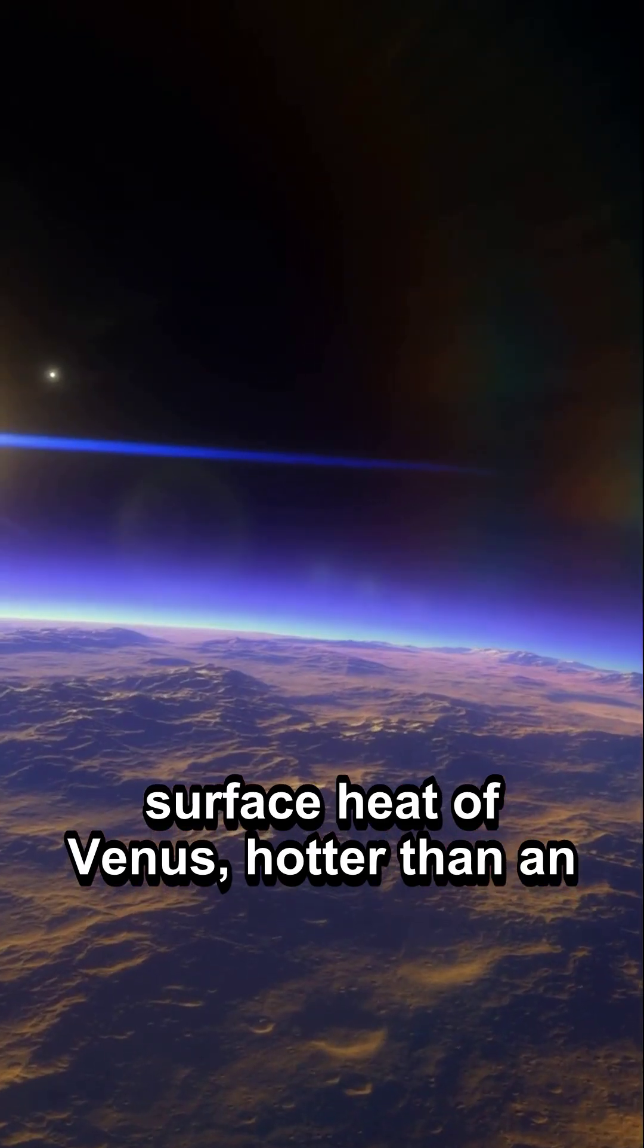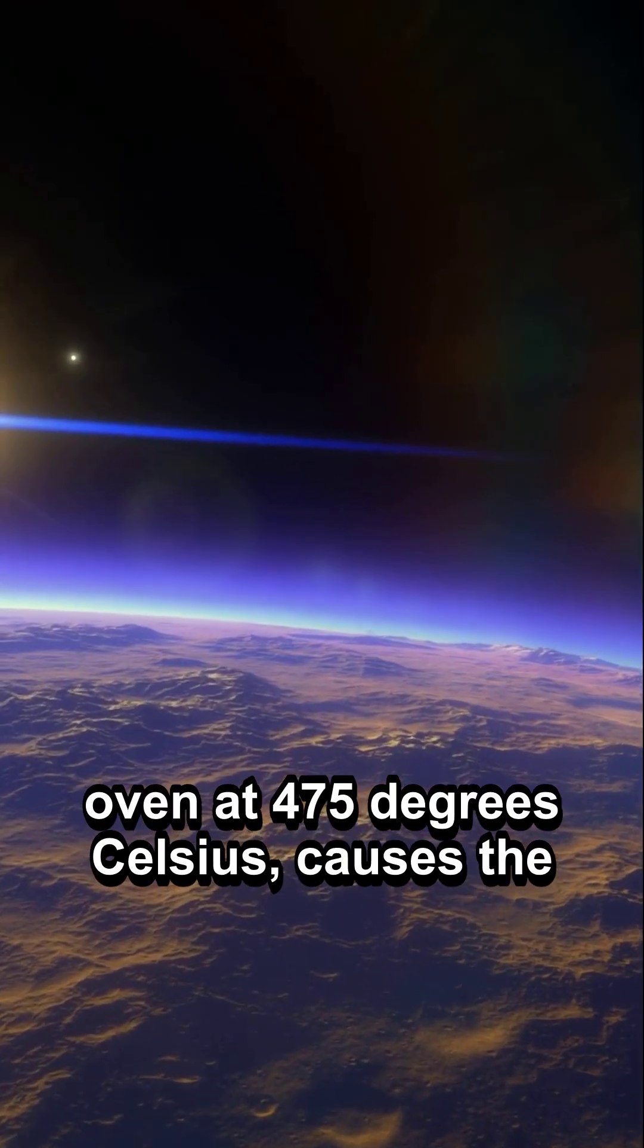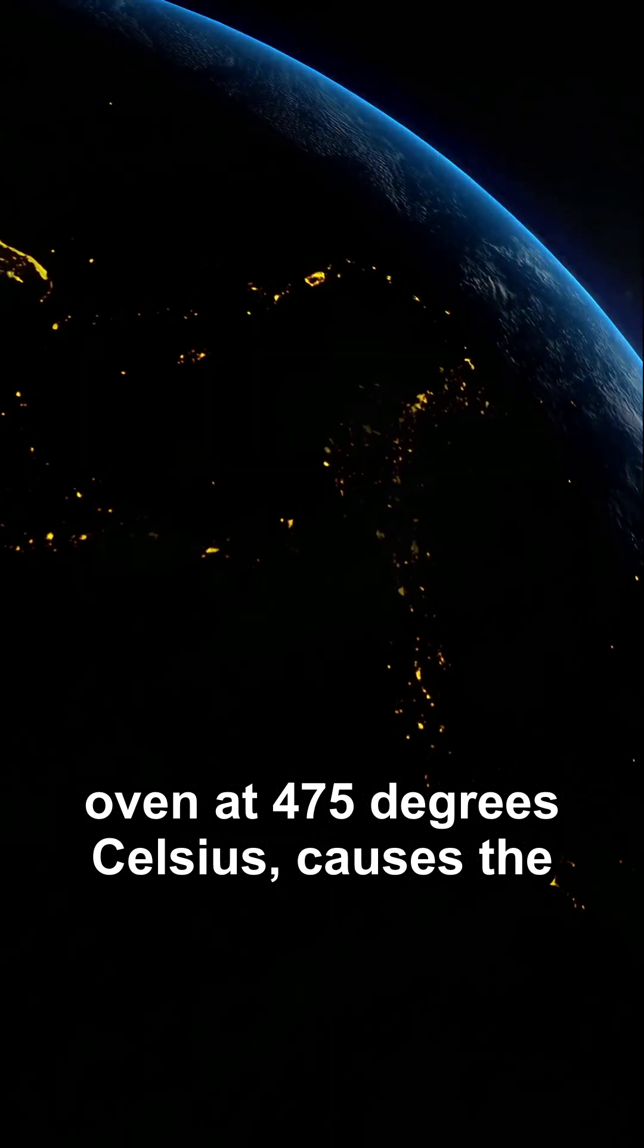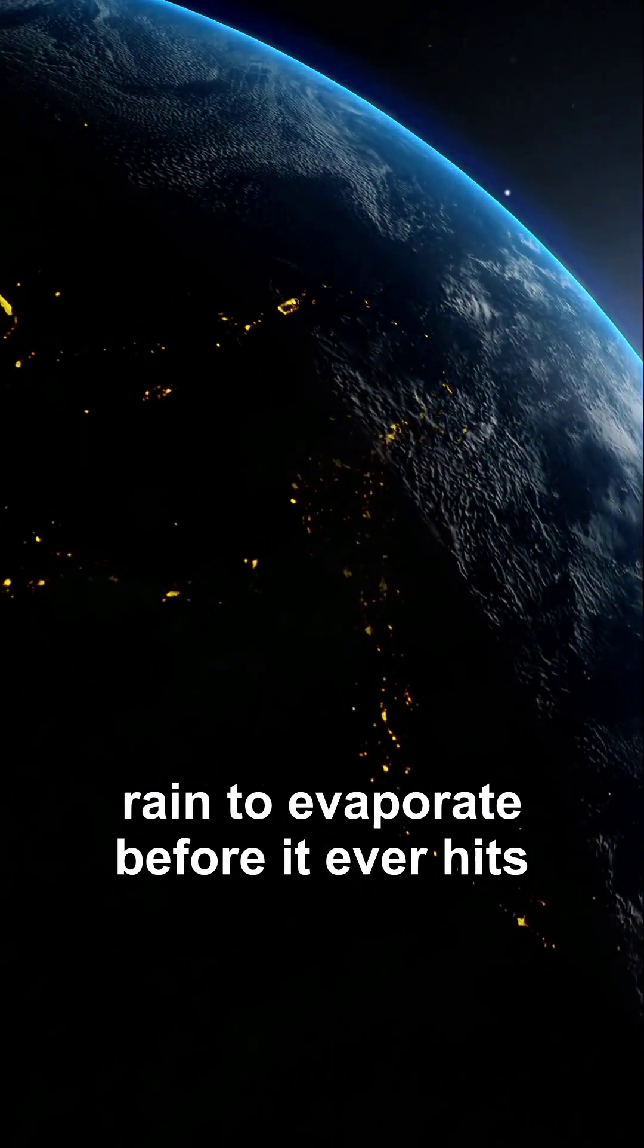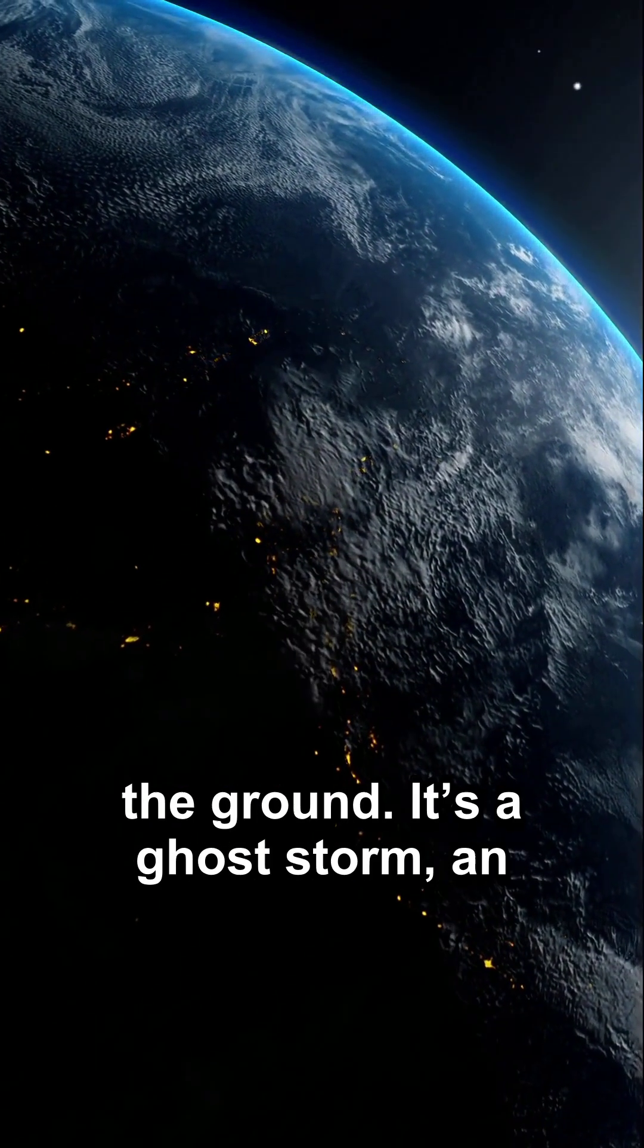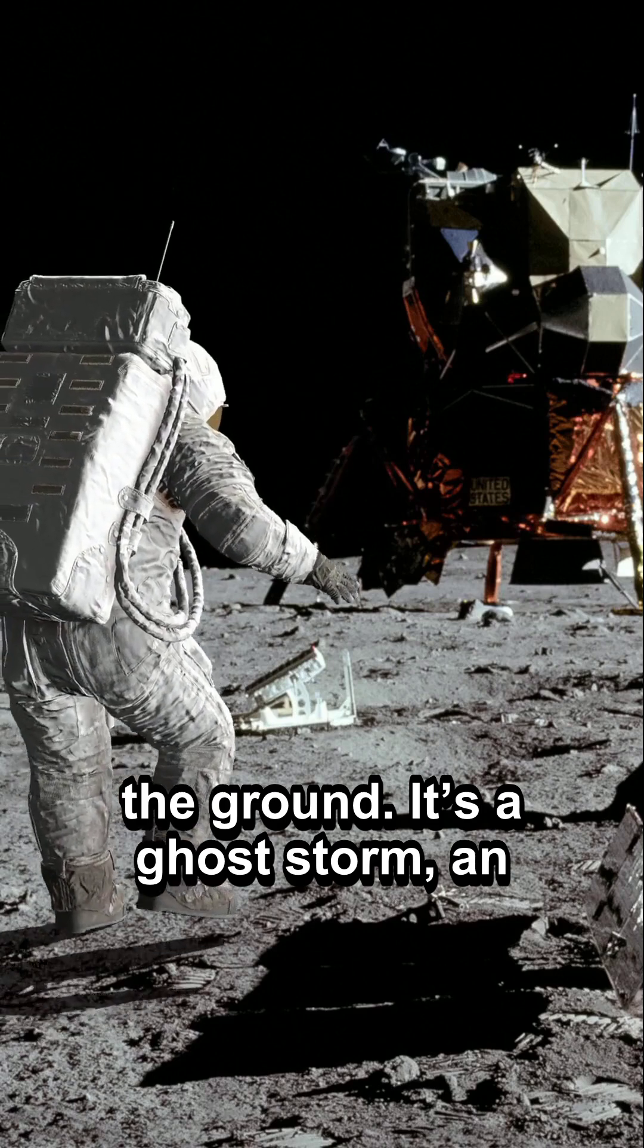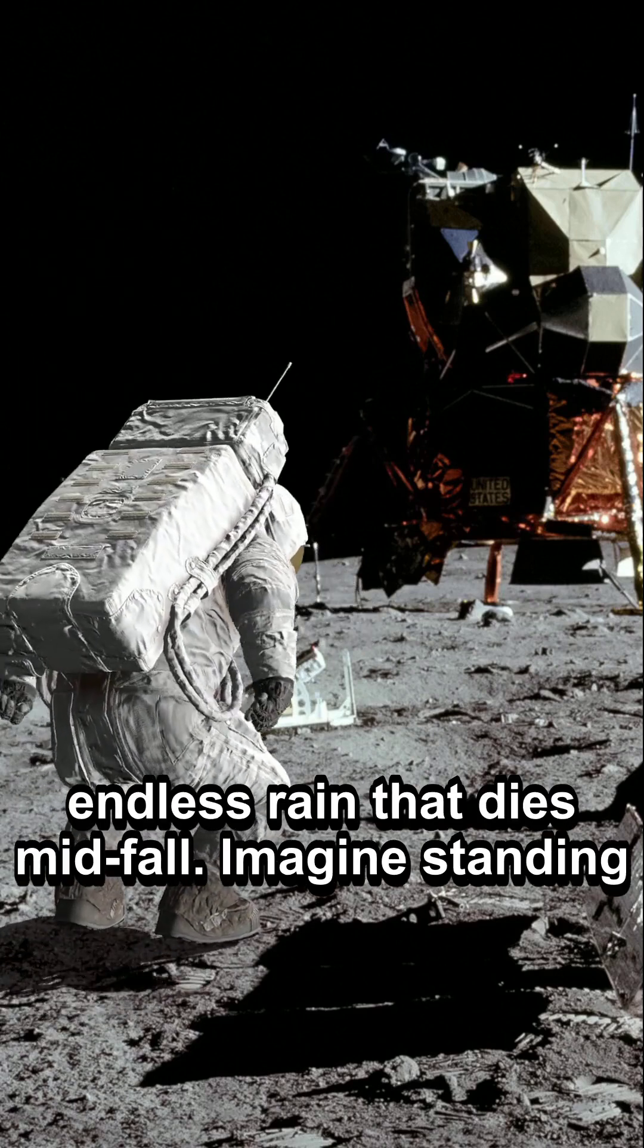The surface heat of Venus, hotter than an oven at 475 degrees Celsius, causes the rain to evaporate before it ever hits the ground. It's a ghost storm, an endless rain that dies mid-fall.